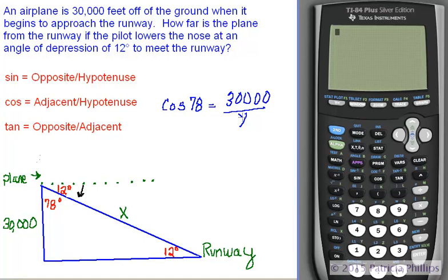Alright, so how are we going to isolate this x? Well, the best way for us to do this is to multiply x times both sides. So what's going to happen is you are going to get x times cosine of 78 degrees equals 30,000.